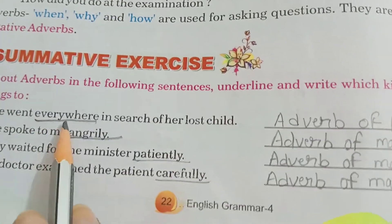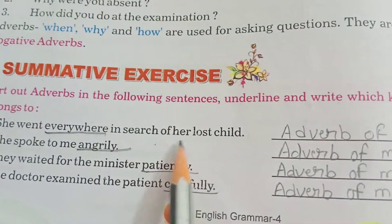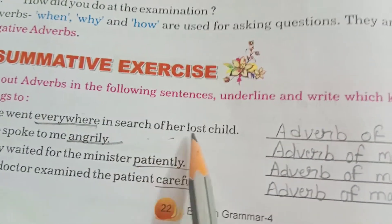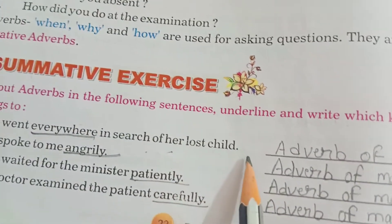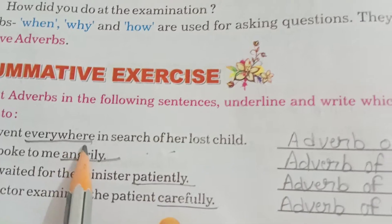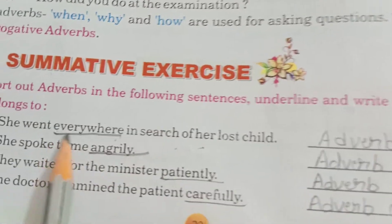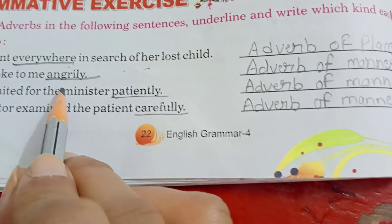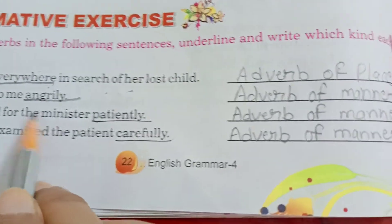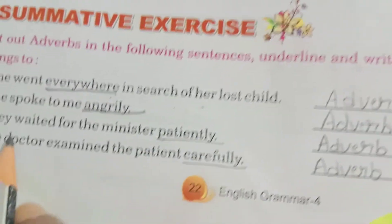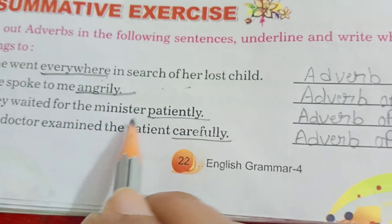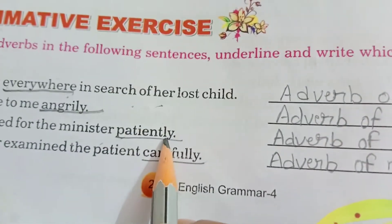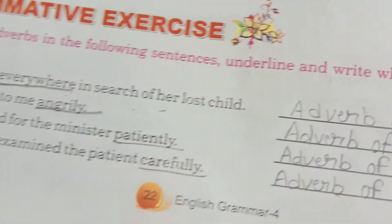She went everywhere in search of her lost child. Everywhere — adverb of place. She spoke to me angrily — adverb of manner. They waited for the minister patiently — adverb of manner.